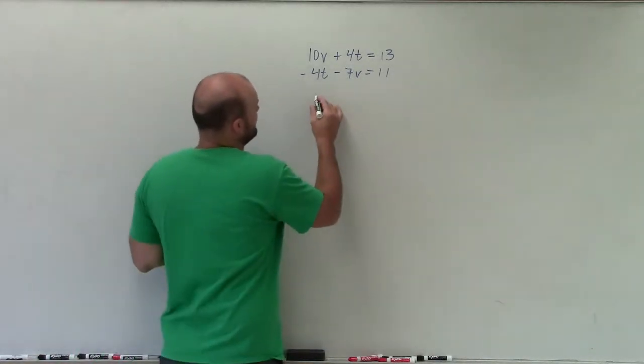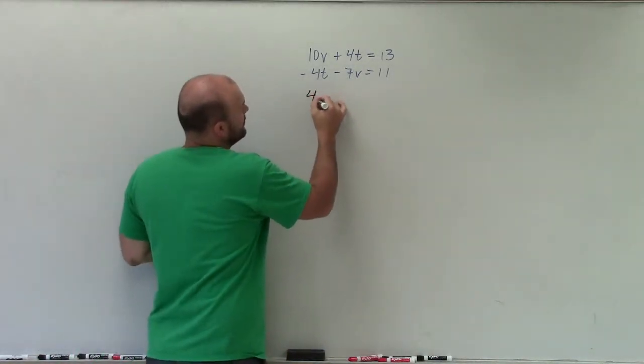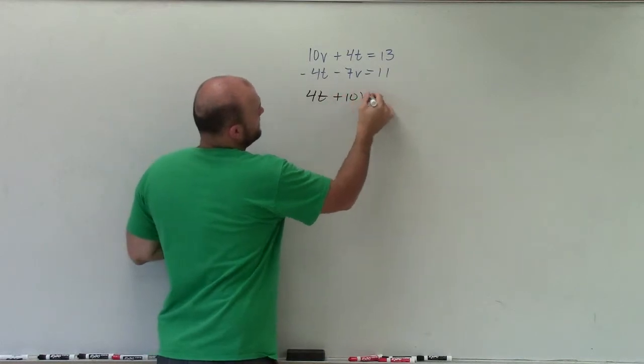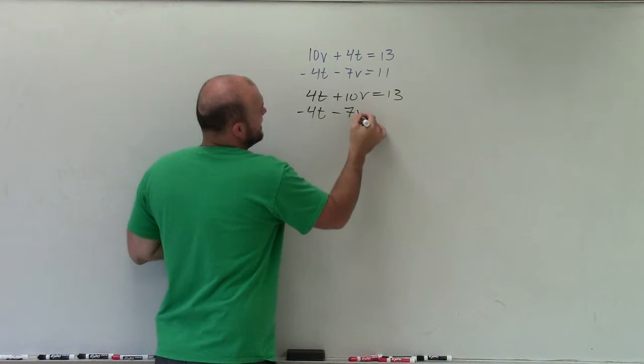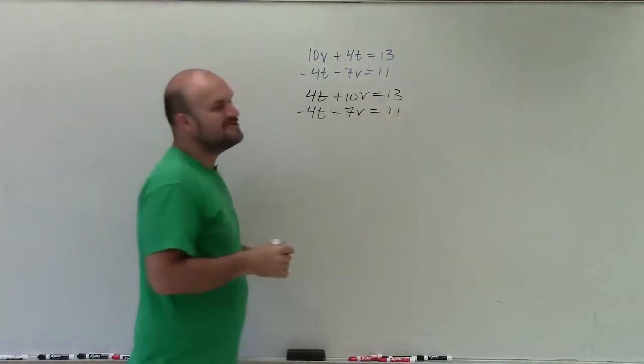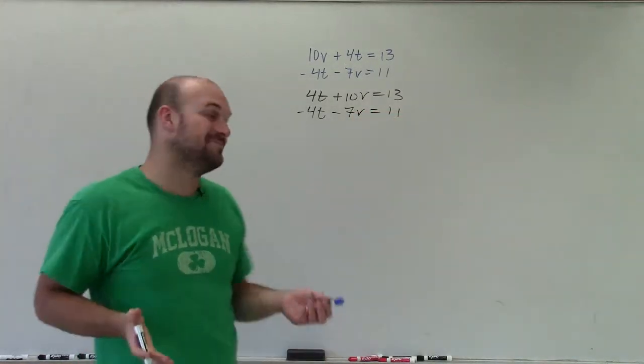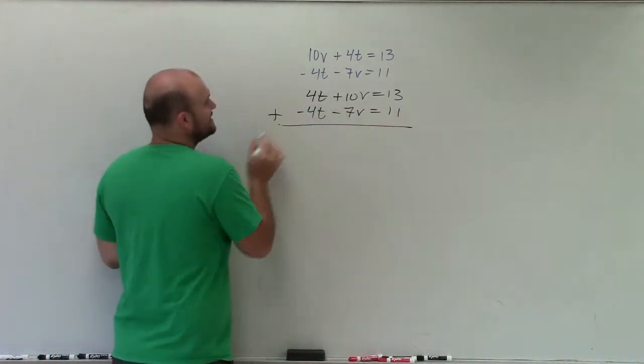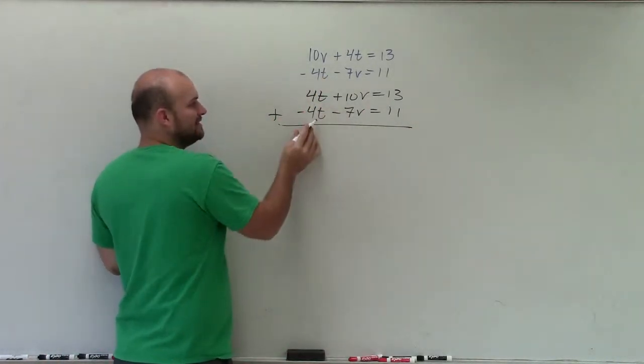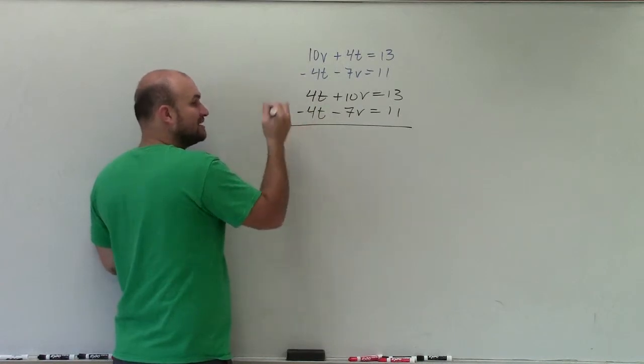So by aligning them, what I have is 4t plus 10v equals 13, negative 4t minus 7v equals 11. Ooh, that looks much nicer, right? Because now I don't have to multiply by any multipliers. I can simply add these two equations, and I'll eliminate the t variable, because 4 minus 4 is 0. 0 times t is just going to be 0.